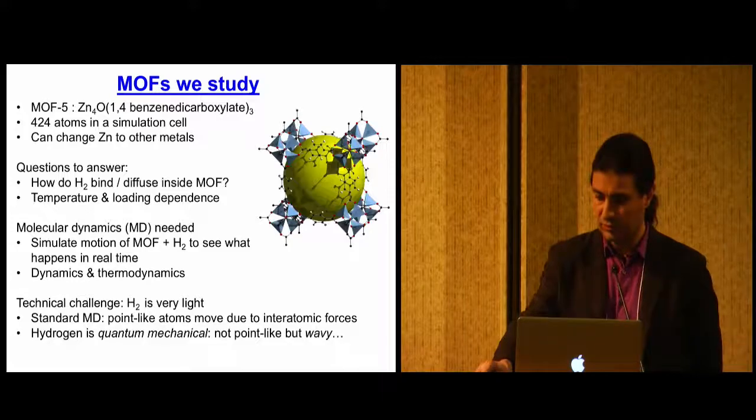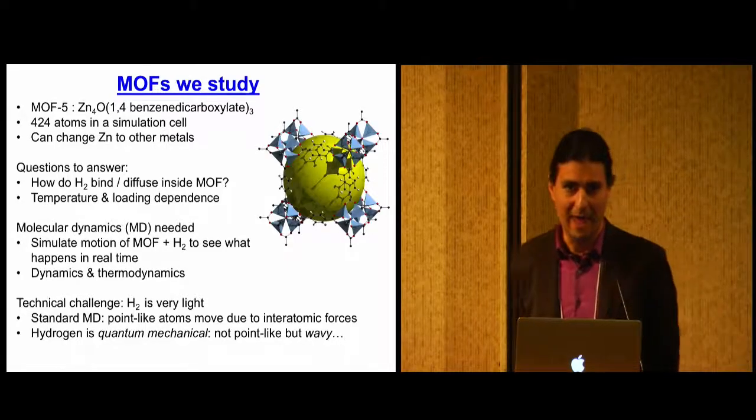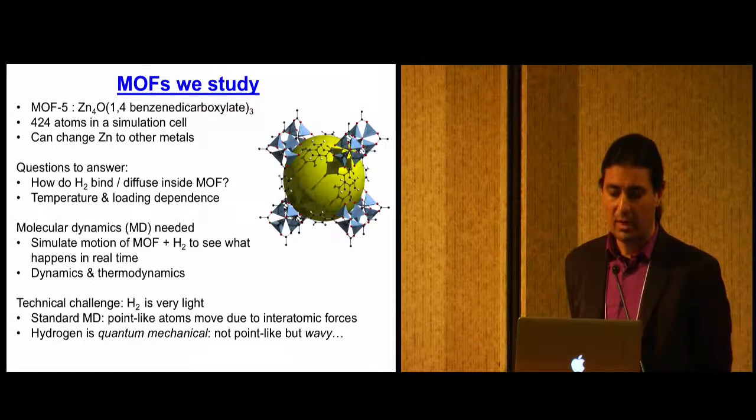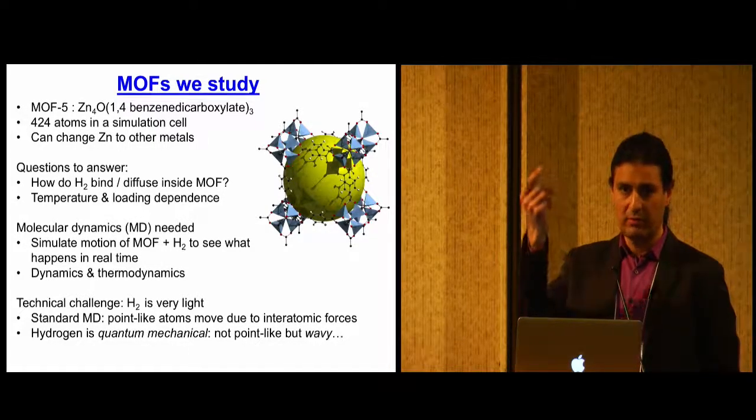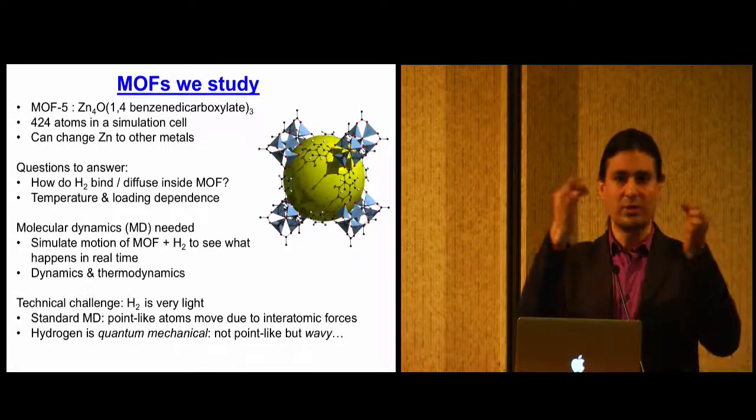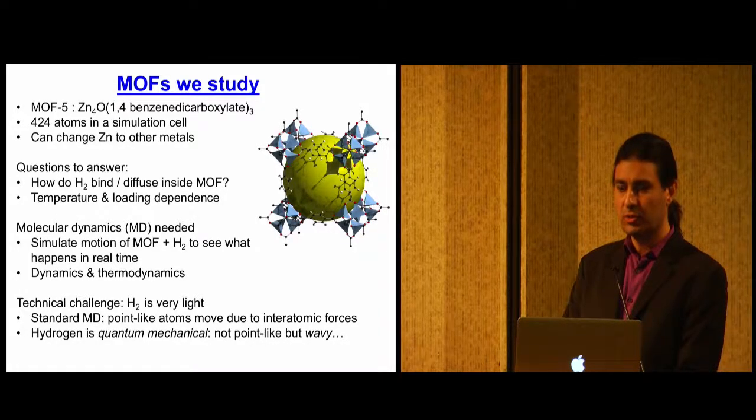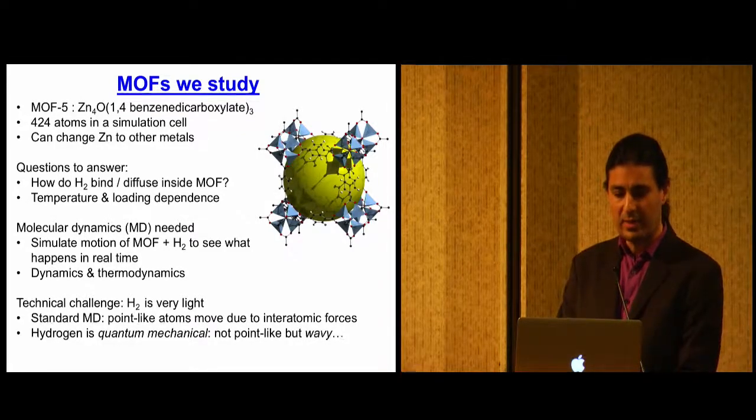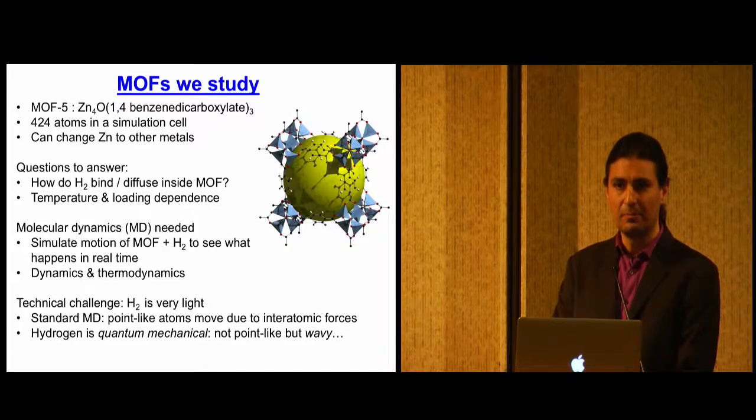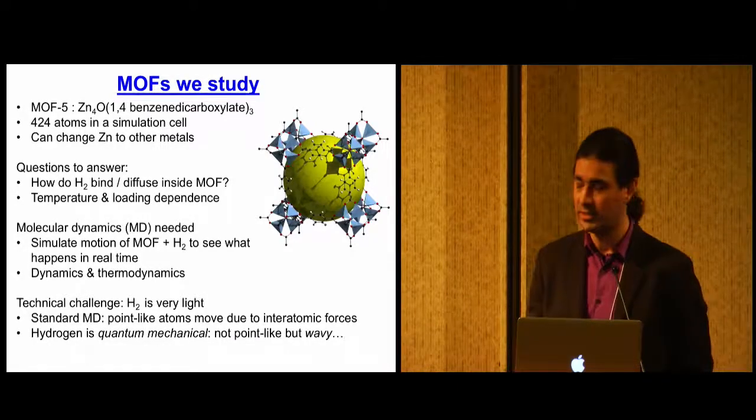So the technical challenge and the reason we have a PRAC is the following. Hydrogen is very light. In fact, it's the lightest molecule that we have. In a standard molecular dynamics calculation, each atom's coordinate is represented by 3 XYZ coordinates, and then atoms have forces on each other and you kind of track that around. The problem is hydrogen is so light that it's basically quantum mechanical at any ambient temperature. That means that you shouldn't describe it as a point moving around but as wavy, which actually makes the problem harder. Does it matter? And the question is, does it matter? And I'll address that in a simple slide later. But it actually does matter. That's the technical challenge.